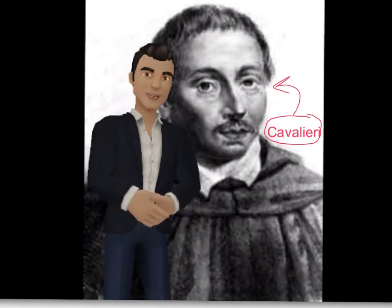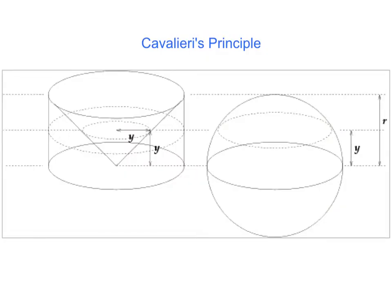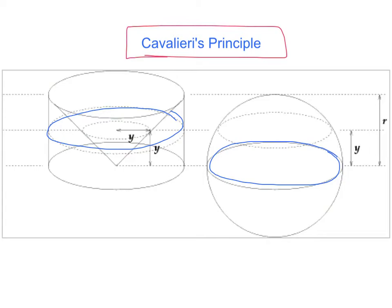Cavalieri came up with something called Cavalieri's principle. Cavalieri's principle states that the volumes of two objects are equal if the areas of their corresponding cross sections are in all cases also equal. This is a formal definition and I can understand that formal definitions can often be quite confusing. So let's look at Cavalieri's principle from a different perspective.